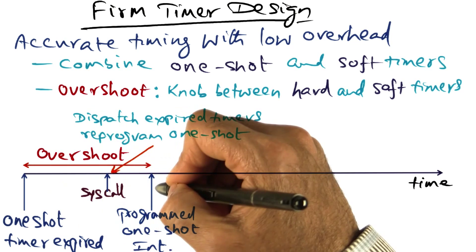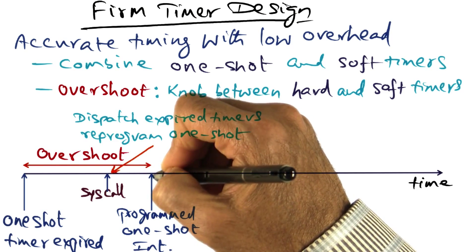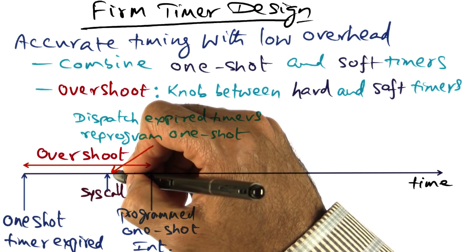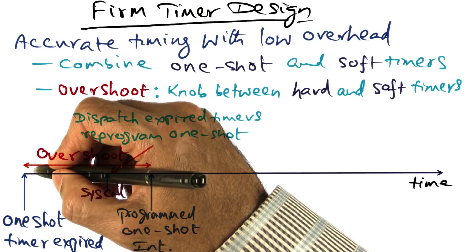Normally, the one shot timer would have gone off here, because this is the overshoot window. But even before that, since the system call happened, at this point we're going to see that there is this one shot timer that has already expired.